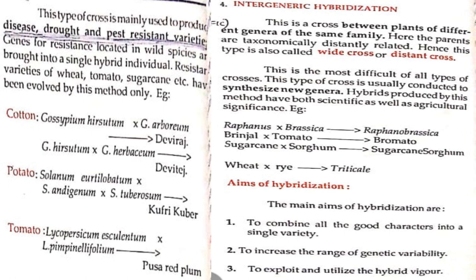The main aims of hybridization are: to combine all good characters into a single variety, to increase the range of genetic variability, and to exploit and utilize hybrid vigor.